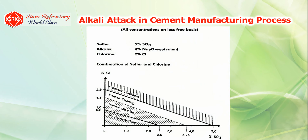The increase in the combined effect of sulfur and chloride can result in substantial clogging in the cyclone area, as shown in the diagram. Therefore, if we can properly retain these volatile substances within the kiln production, the productivity of the kiln will be optimized.